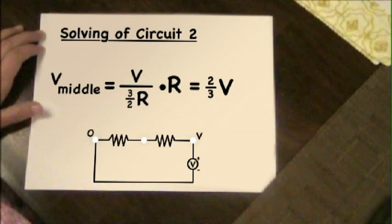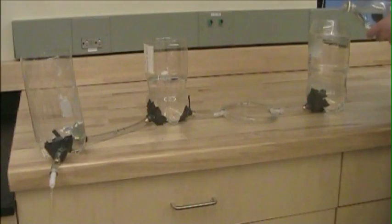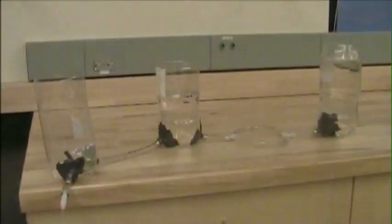Let's see what happens. We see that the water level of the middle bottle has risen to a level that is higher than the level of circuit 1. We mark it with a P to indicate that this is the water level for the parallel circuit.